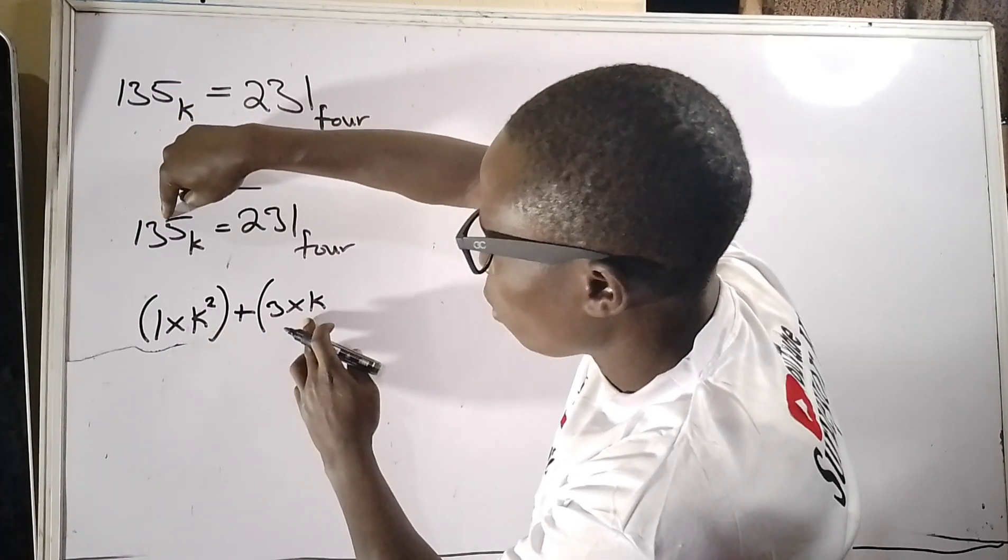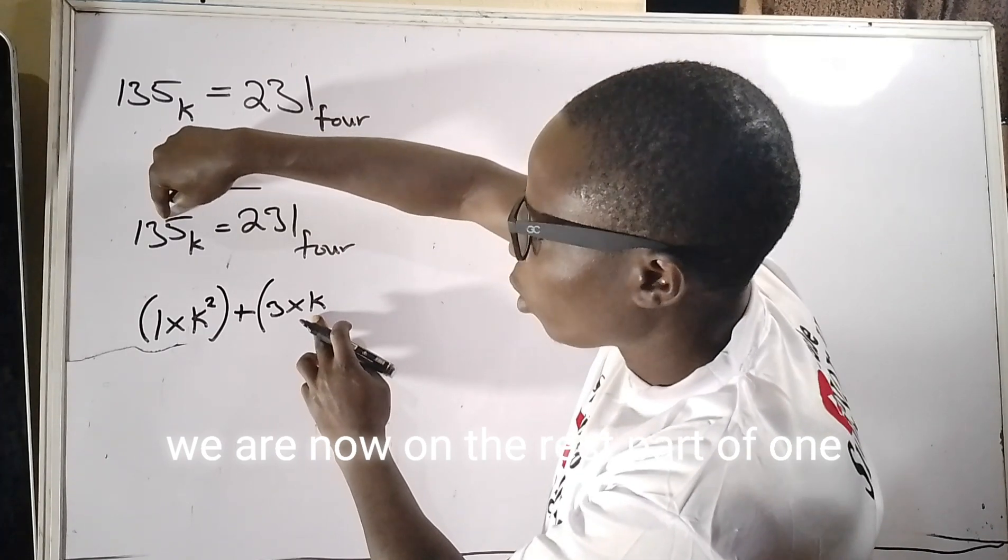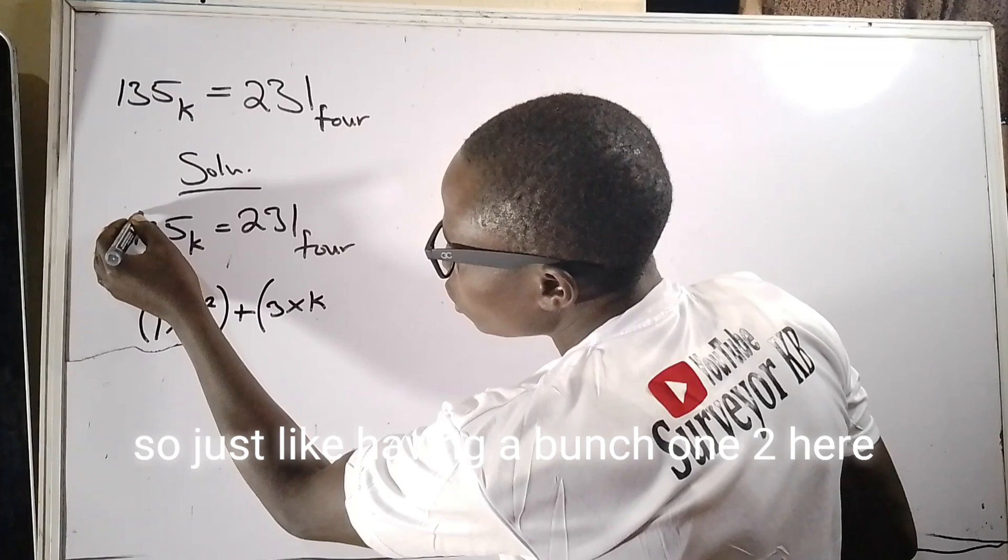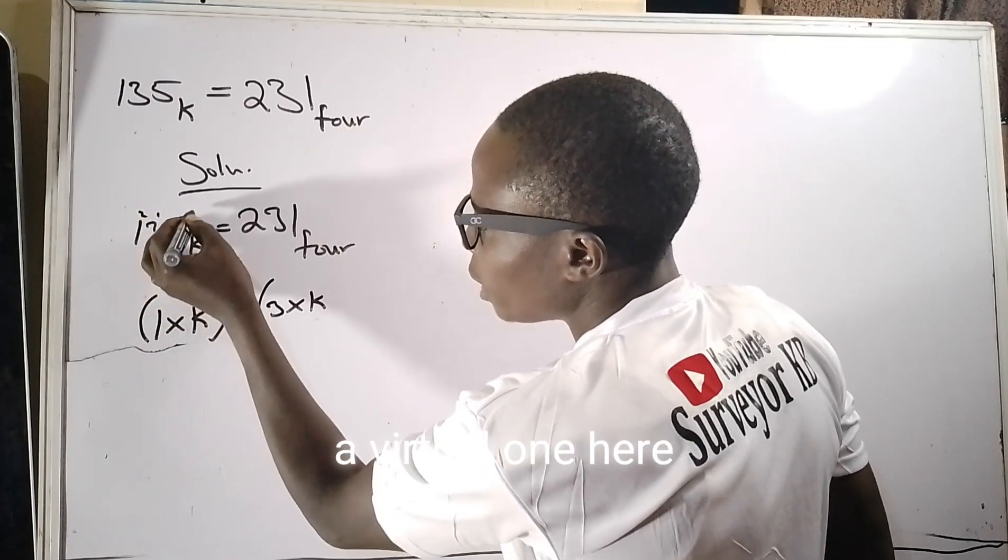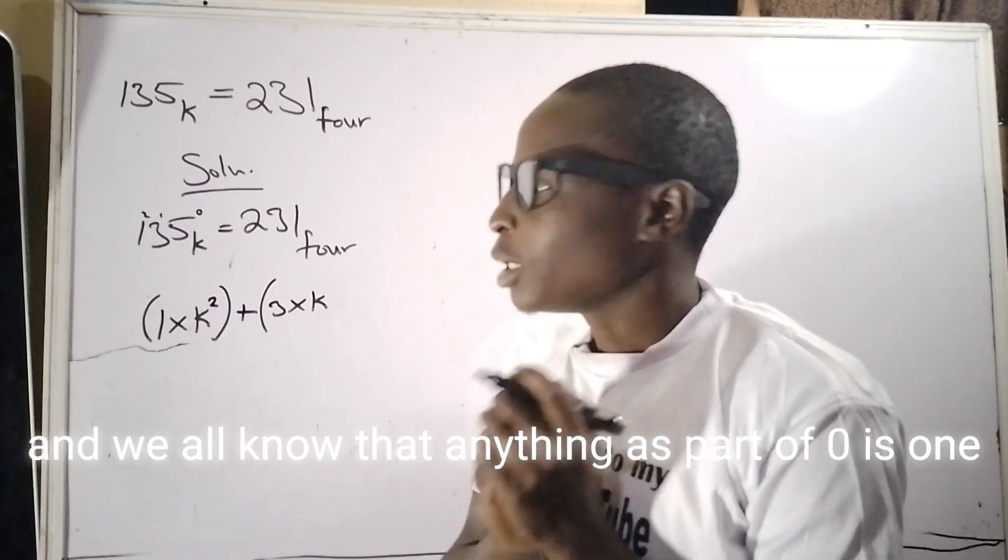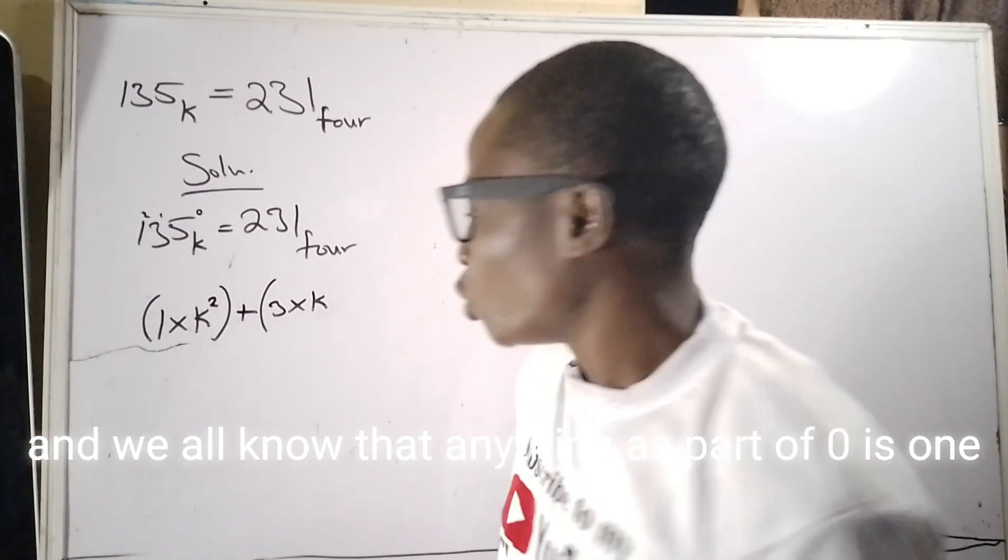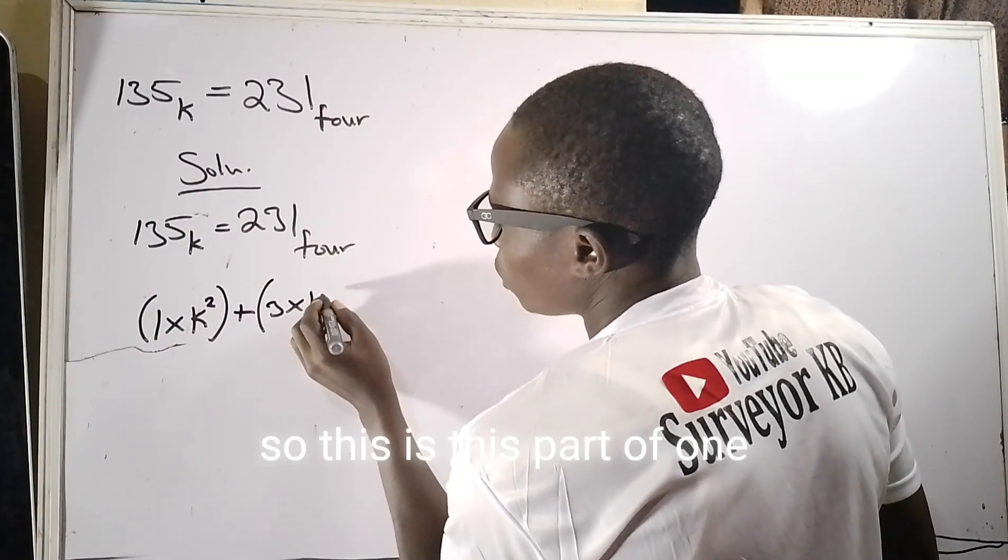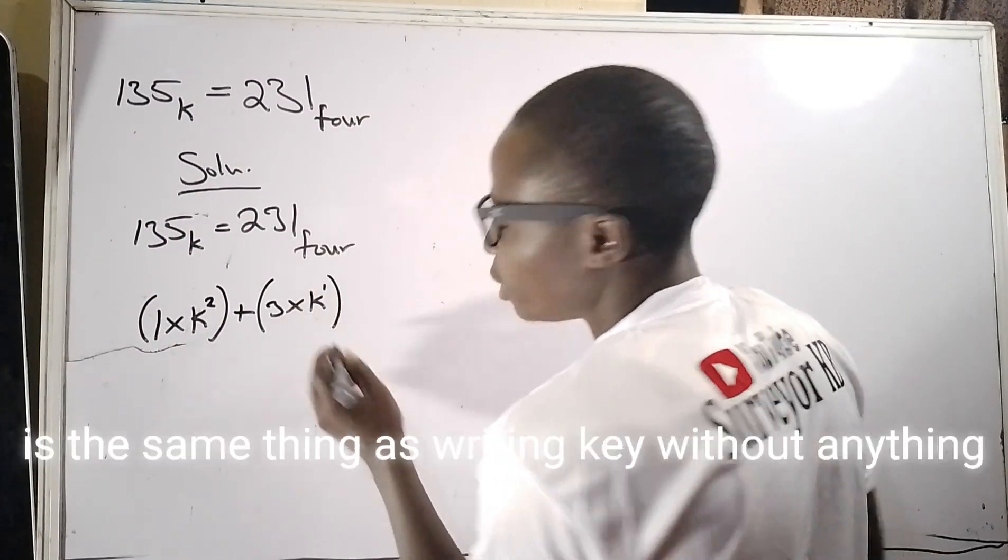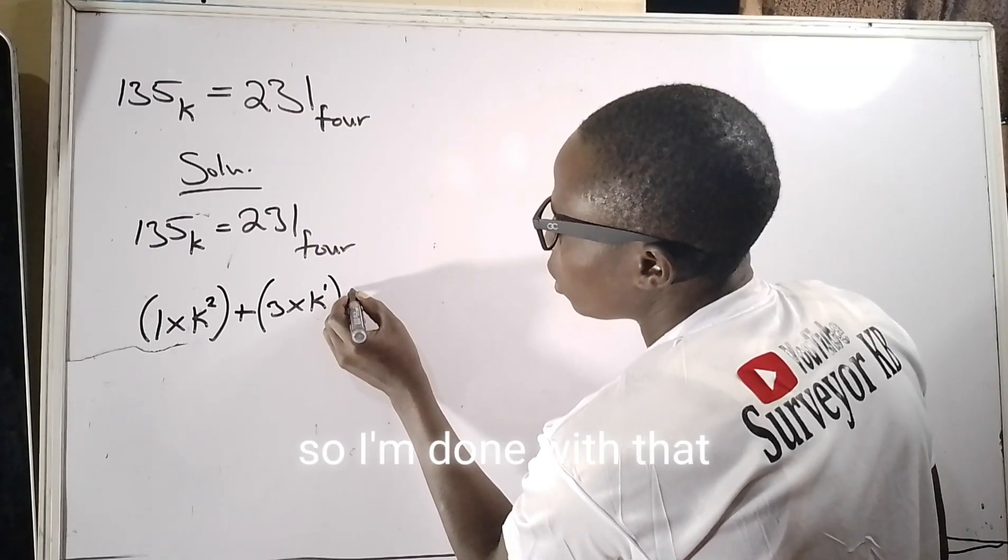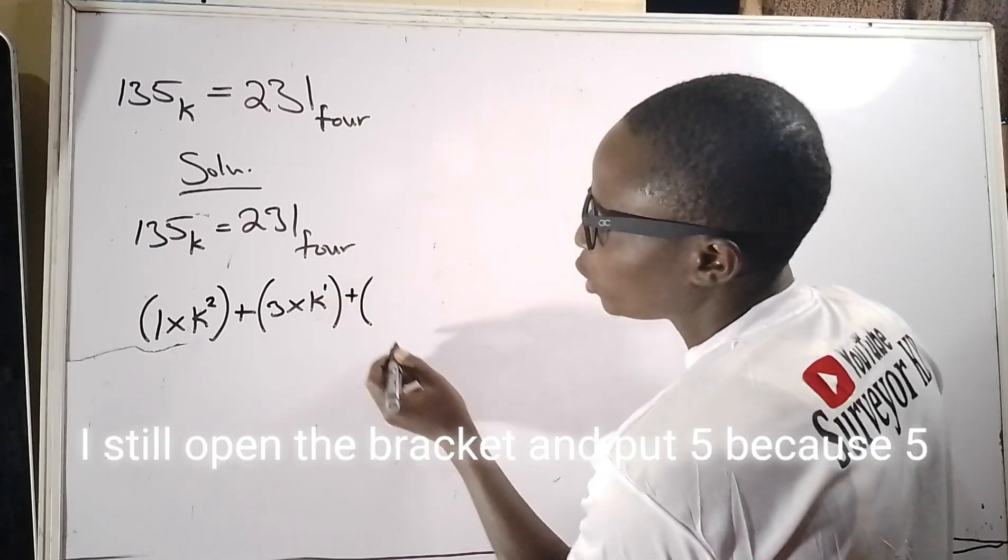It's like having a virtual two here, a virtual one here, and a virtual zero here. And we all know that anything raised to the power of zero is one. So this raised to the power of one is the same thing as writing k without anything.